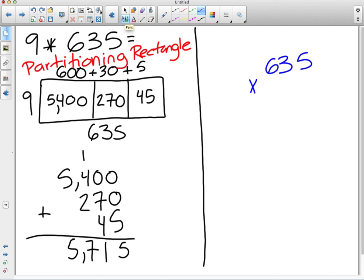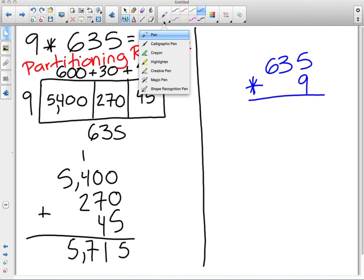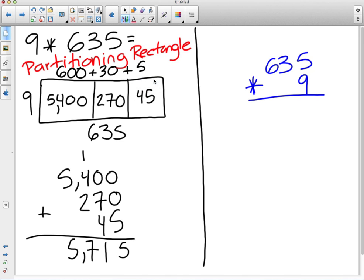That's 635 times 9, paying special attention to place value here. Chase, what would you like to do first? So first you do 9 times 600. Yeah, 9 times 6. We see this 9, and the 6 is in the hundreds place, so we know that it's actually not 9 times 6, but 600.